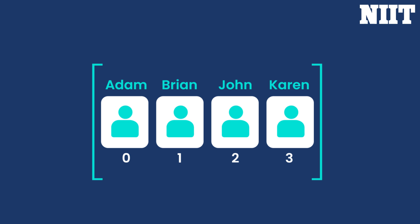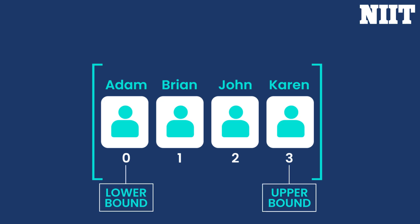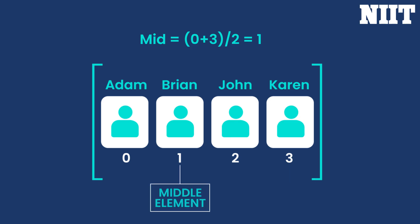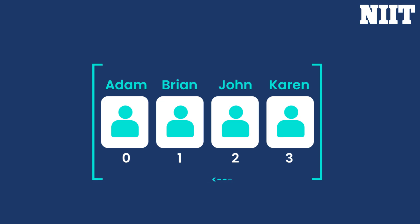Again, we need to find the middle element in the left-most list. Here, the lower bound is equal to 0 and the upper bound is equal to 3. The middle element comes out to be at index 1. The element at this index is Brian. Since J comes after B, we will search the record of John in the right part of the list.